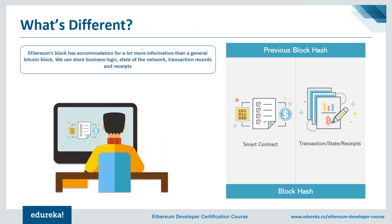Now that we know the necessity behind Ethereum, let's discuss the features it brings to the table. Bitcoin, as the only notable blockchain before Ethereum, is our benchmark. Bitcoin decentralized the financial system by removing intermediaries like banks, Visa, and PayPal. Ethereum takes this idea much further and tries to decentralize most imaginable services, with the help of smart contracts — programs or pieces of code that run on the blockchain.